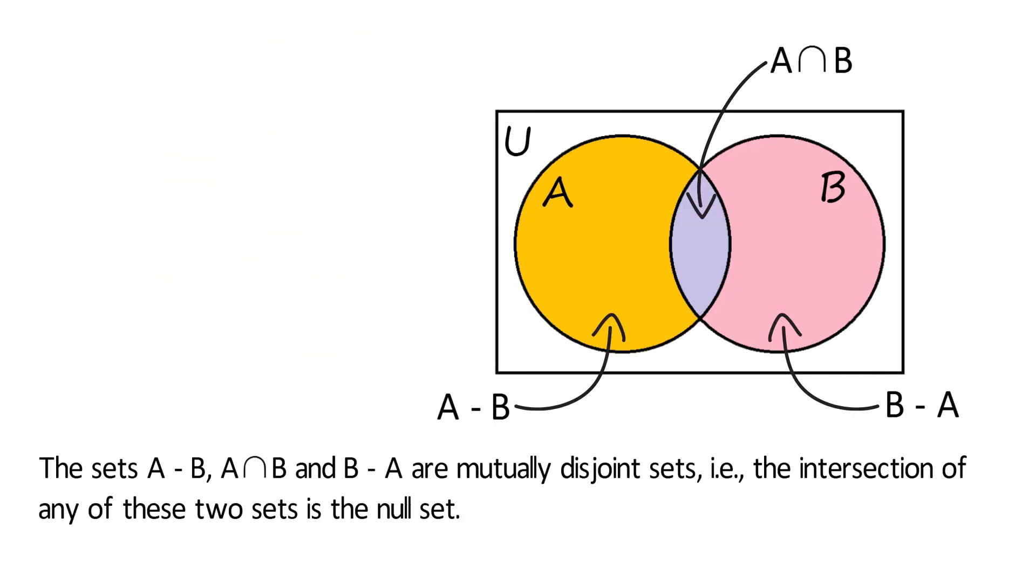Also, note that the sets A minus B, A intersection B, and B minus A are mutually disjoint sets. That is, the intersection of any of these two sets is the null set.